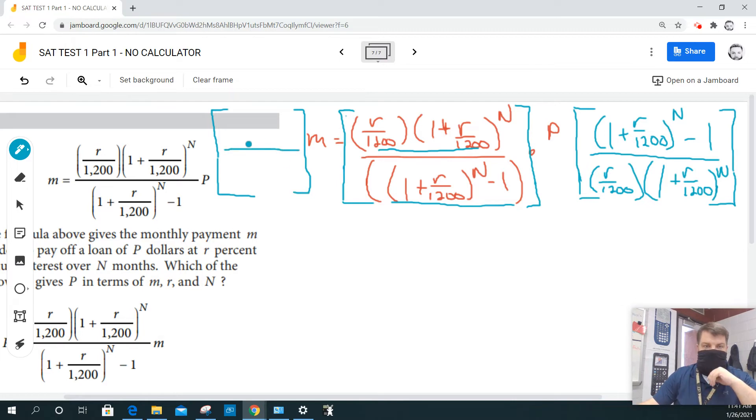And I'm really going to have to squeeze this in here because I'm running out of space. But 1 plus R over 1,200 raised to the N minus 1, all over R over 1,200, times the quantity 1 plus R over 1,200 raised to the N.